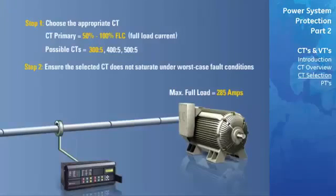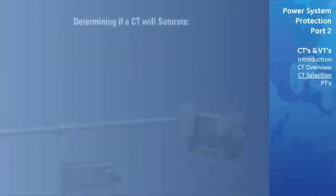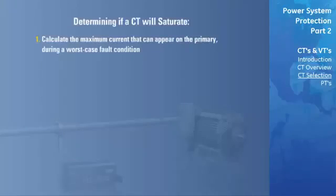The next step is to ensure this CT doesn't saturate under worst-case fault conditions. If it does, a higher ratio CT, such as the 400 to 5 CT, may need to be chosen. The first step in determining whether a CT will saturate is calculating the maximum current that will appear on the primary of the CT under a worst-case fault condition. The maximum fault current at the load is determined by a fault study, and in this case was determined to be 6,000 amps.